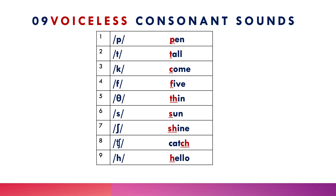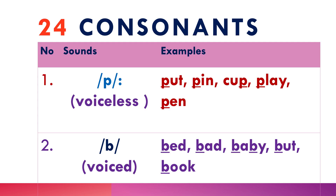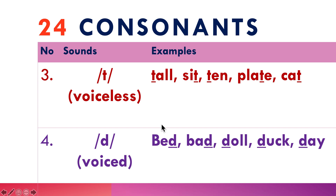Now let's look at 24 consonant sounds and the difference between voiceless and voiced sounds with examples. Number one: /p/ is voiceless — as in put, pin, cup, play, pen. Number two: /b/ is voiced and does vibrate — as in bed, bad, baby, but, book.